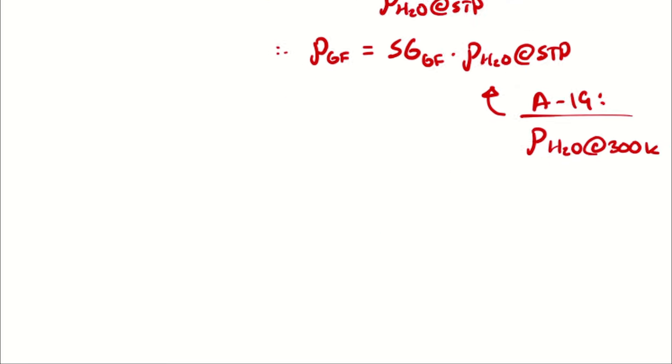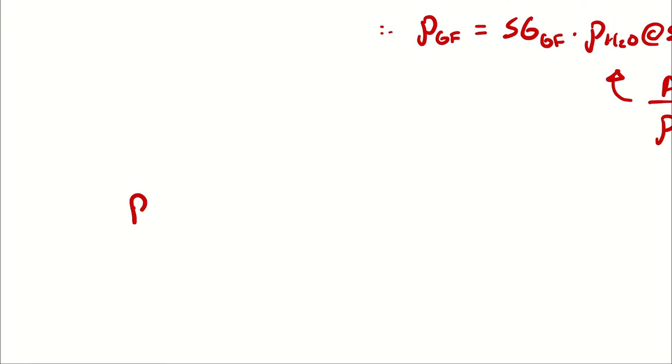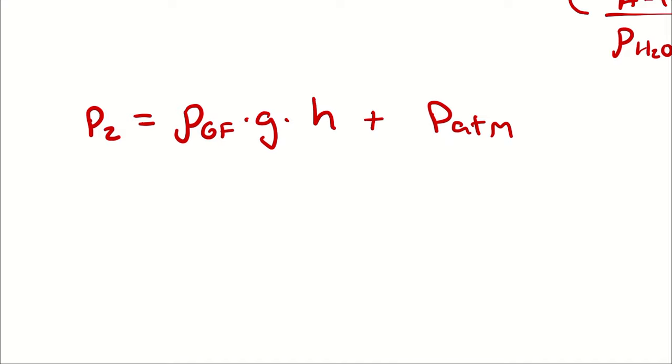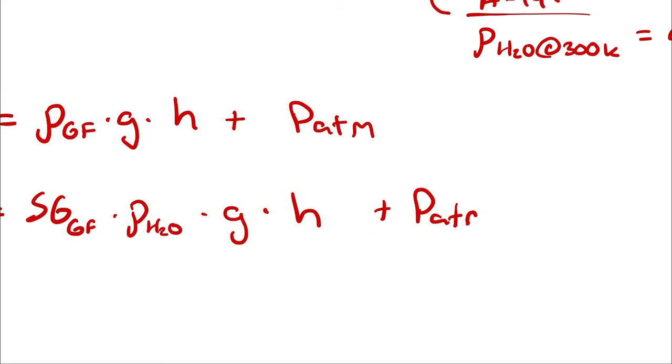I'm solving this equation for P2. I will rewrite this as P2 is equal to the density of our gauge fluid multiplied by gravity, multiplied by height, and then we are adding atmospheric pressure. I will write this as specific gravity of our gauge fluid times the density of water at standard temperature and pressure times gravity times height plus P atmosphere. If we don't have a gravity, I'm going to assume standard gravity. I'll write that under assumptions.